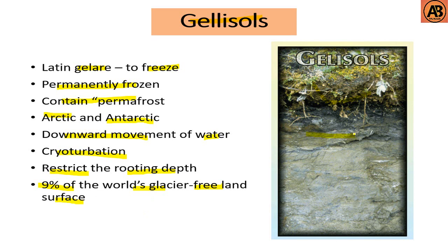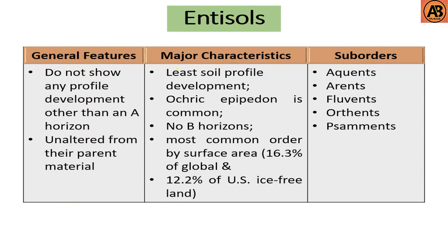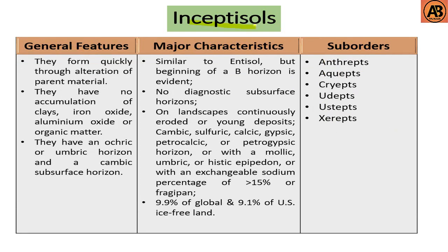That covers all 12 soil orders. Now we are going to learn the sub-orders of these orders. The sub-orders for Entisols include Aquents, Arents, Fluvents, Orthents, Psamments, etc.